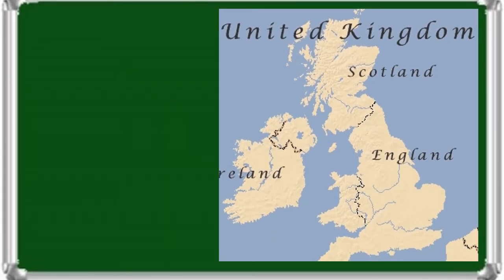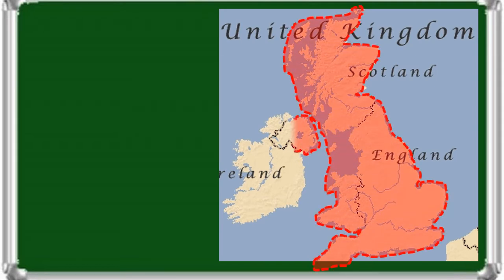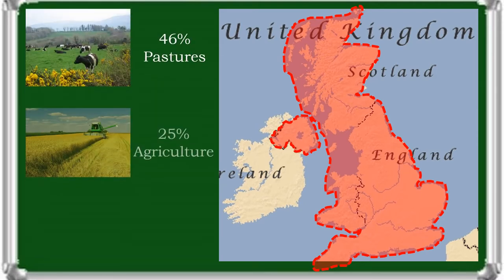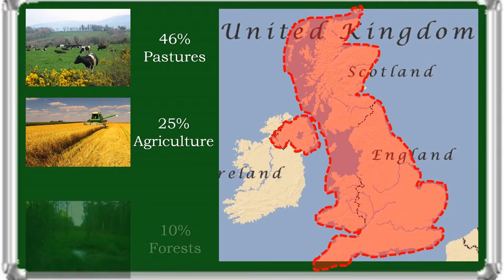The United Kingdom occupies the major part of the British Isles and includes the island of Great Britain, the northeastern one-sixth of the island of Ireland, and some smaller surrounding islands. It lies between the North Atlantic Ocean and the North Sea, with the southeast coast coming within 22 miles of the coast of northern France, from which it is separated by the English Channel. In 1993, the United Kingdom turned out to be 46% used for pastures, 25% cultivated for agriculture, and 10% forested.